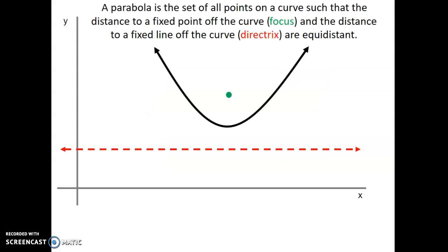Here's the definition of a parabola. It's a set of all points on a curve — the curve is the black line, made of a bunch of different points. The distance to a fixed point off the curve, called the focus (shown in green), and the distance to a fixed line off the curve, called the directrix (the dashed line), are equidistant. If you drew a line from the focus point to any place on the curve and then from that point to the directrix, those two distances would be the same.